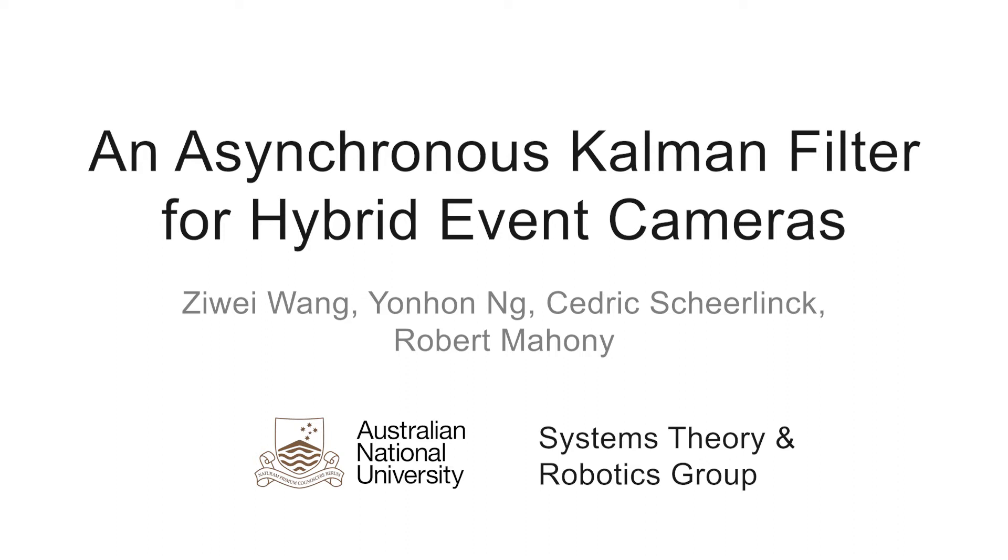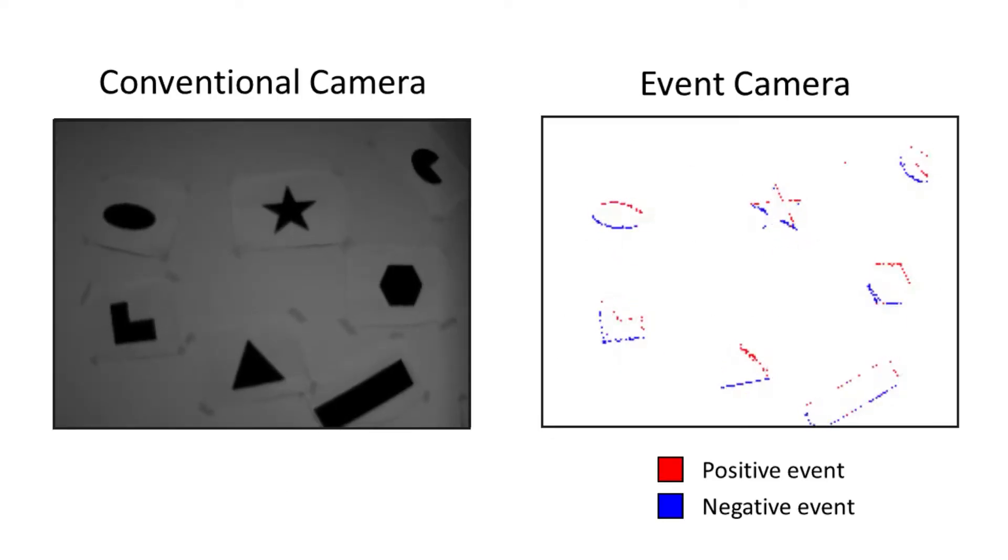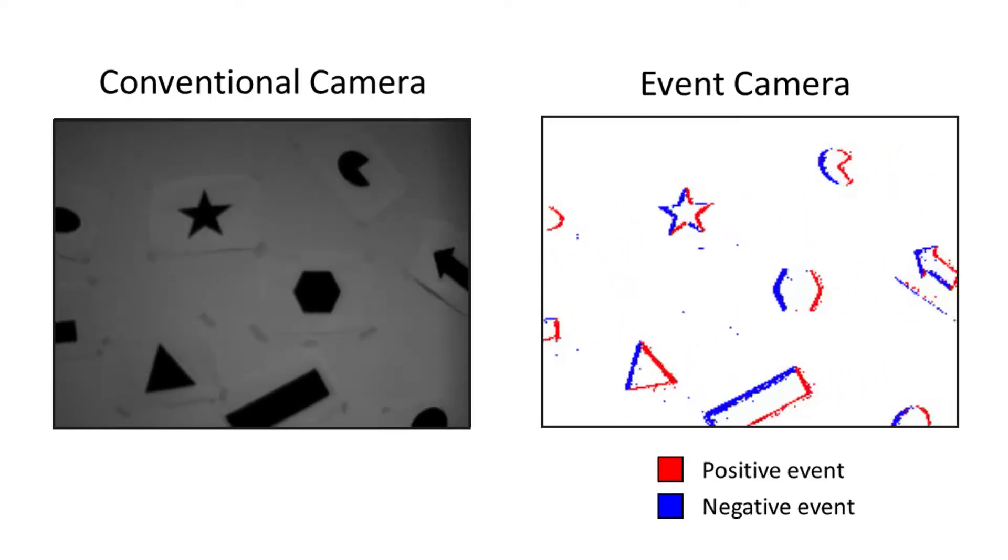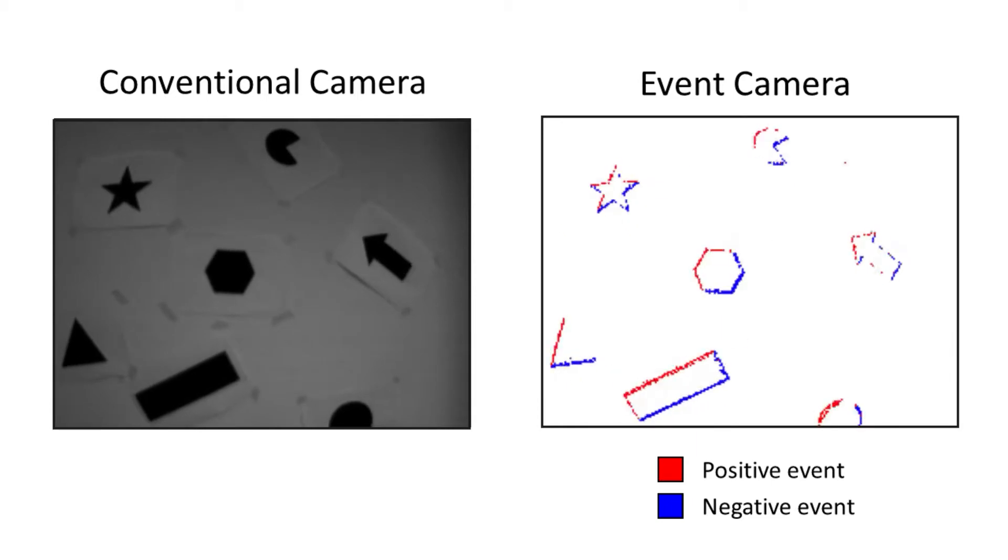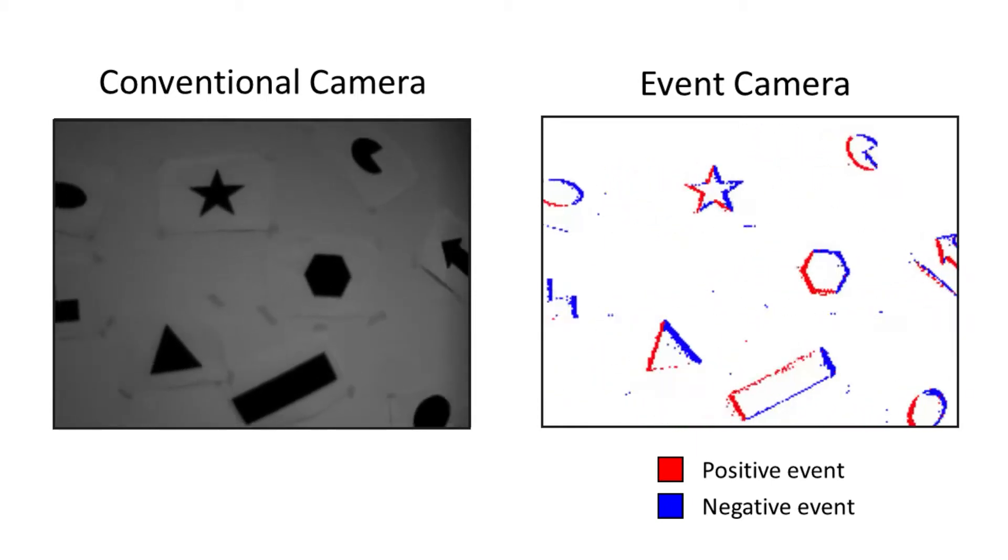An asynchronous Kalman filter for hybrid event cameras. Conventional frame-based video cameras see the world as a series of image frames captured at fixed frame rate, for example 30 Hz.